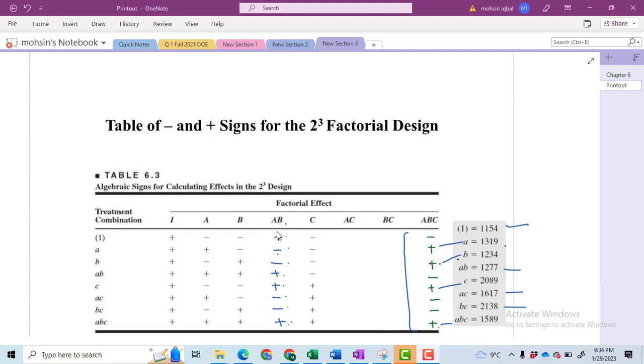Then insert the signs for all these four columns. After that, put the sum of all those values that I have shown to you. This is the experimental data. Then compute the effect of A, effect of B, effect of C, effect of AB, AC, BC, and ABC. So you will get the seven effects using the contrast method.